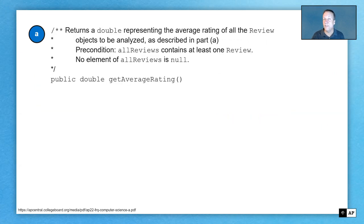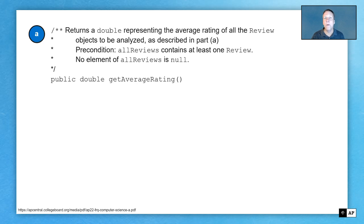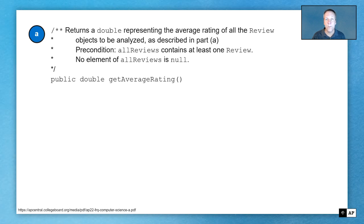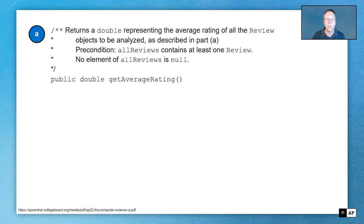Given the instance variable that you circled already, and knowing the methods that are associated with the Review class, can you write this getAverageRating method which returns a double that represents the average of all the reviews? Go ahead and hit pause, give it your best shot, and we'll come back and look at the solution in a moment.